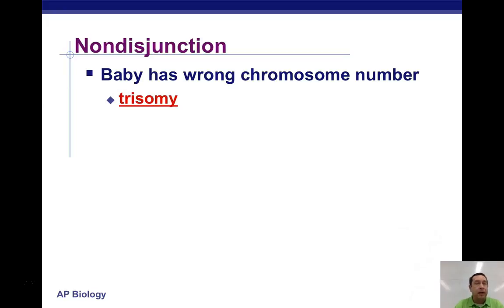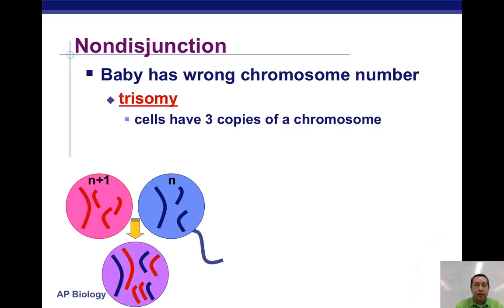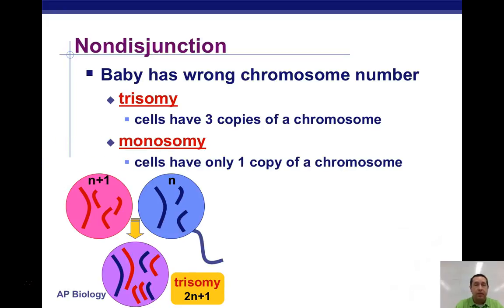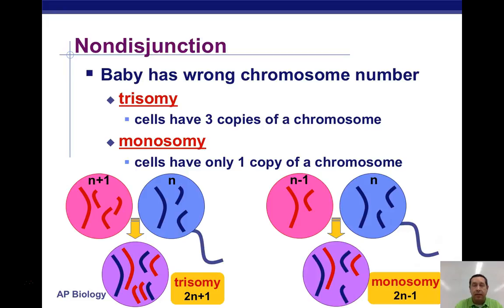One of the most common cases in humans where the baby survives is a form of trisomy — having three copies of a chromosome. An egg cell that has an extra copy of a chromosome is fertilized by a sperm with a normal number, and you get a cell with an extra copy of one chromosome. Monosomy, on the other hand, is when the baby has only one copy of a chromosome. In this case the egg is missing a chromosome, giving a monosomy — a cell with only one copy of one of the chromosomes.